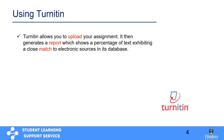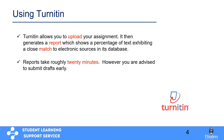Turnitin allows you to upload your assignment, then it generates a report. In the report there is a percentage of match which gives you an idea of how much of your work has been matched to other text in its repository. The report generally takes about 20 minutes, but this is not a very accurate time to rely on. Instead, you are advised to submit your drafts as early as possible — ideally at least 24 hours beforehand.